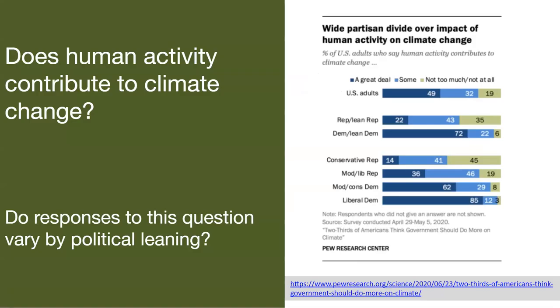We're going to go through an example using a survey that was conducted by the Pew Research Center that asked, does human activity contribute to climate change? We have some great data here from the Pew Research Center. We are going to conduct a chi-square test to find out whether or not the response to this question depends on one's political leaning. That is, whether you're Republican or you lean Republican, or whether you're Democrat or lean Democrat.